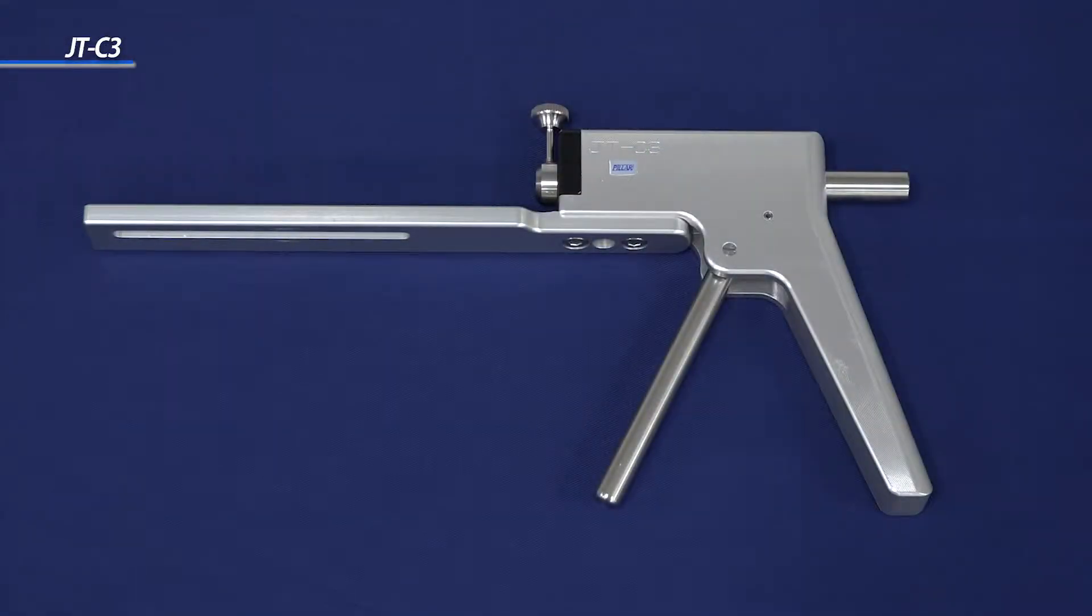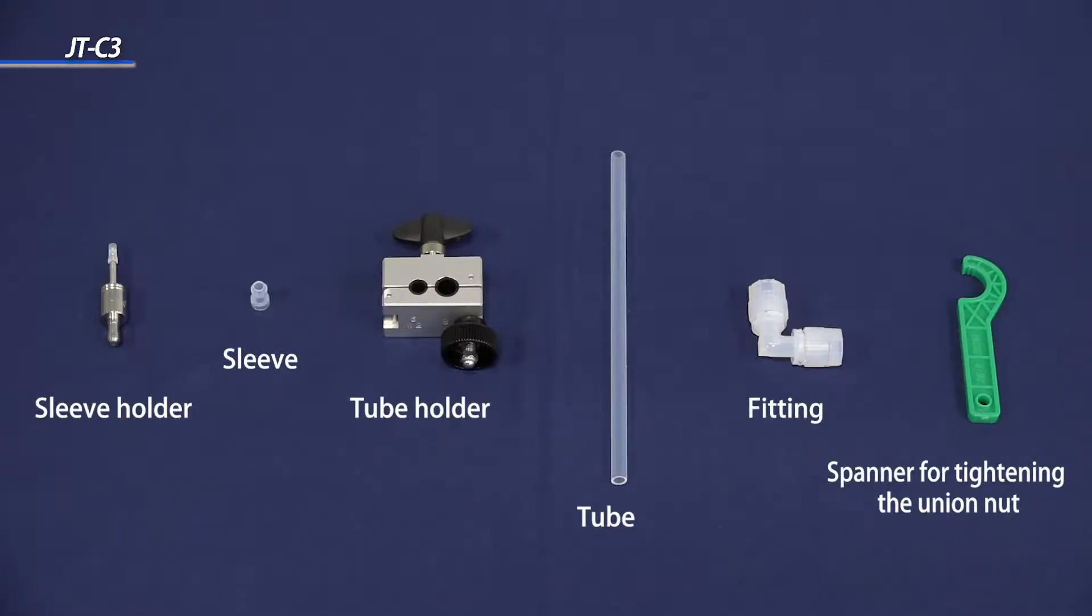The JT-C3 tool consists of three sub-components. The JT-C3 package includes holders for tubes and sleeves for various sizes. For any particular size, the technician would need to prepare a corresponding size of the sleeve, tube, fitting, and the spanner for tightening the union nut.